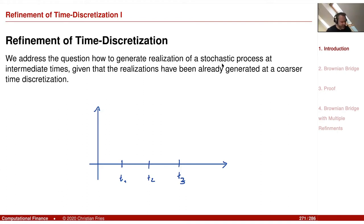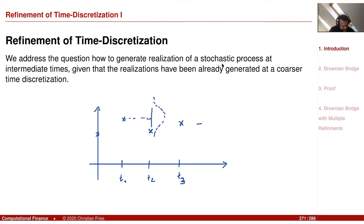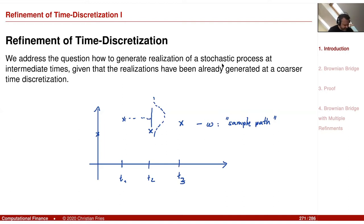Let's consider just the Brownian motion. The Brownian motion starts here, we draw a random number, the next value is here. From this value you have a normal distribution, and you draw another random number, and the next value is here, and so on. We generate a Brownian motion — this is our omega, a sample path of the Brownian motion at discrete time steps.